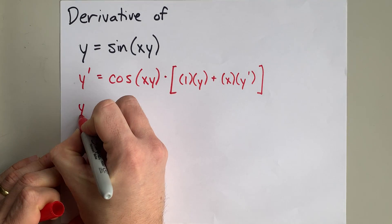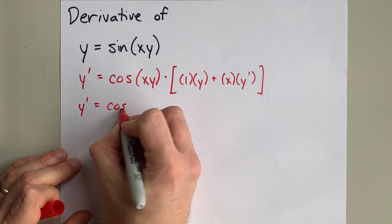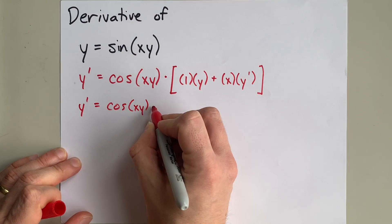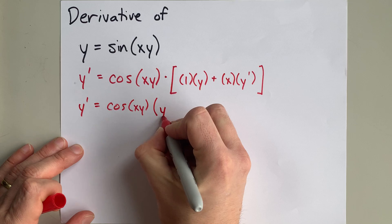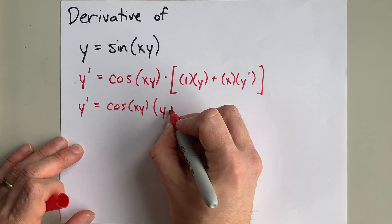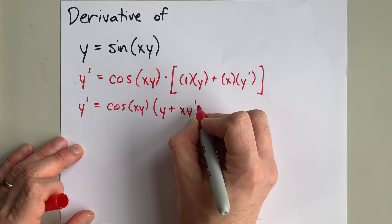I'm going to clean this up a little. I got y prime equals cos of xy times—1 times y is y, and x times y prime I'm just going to write as xy prime.